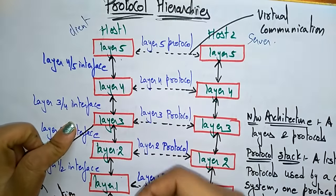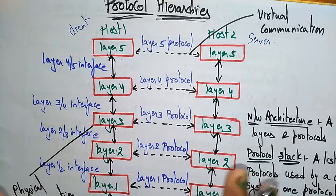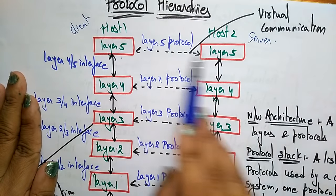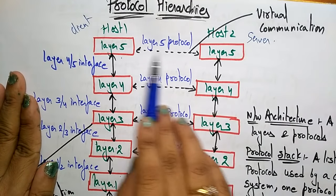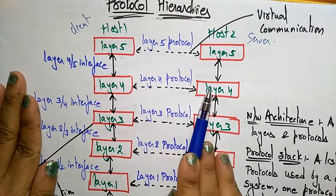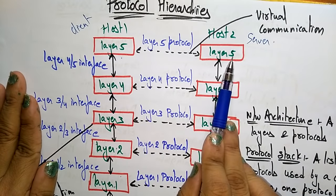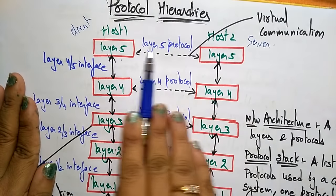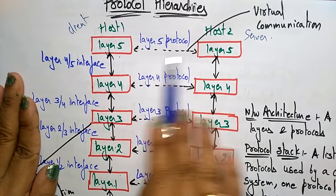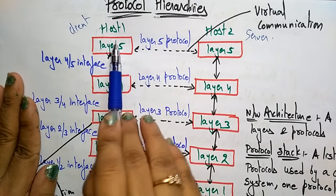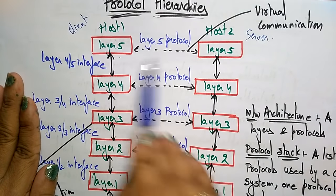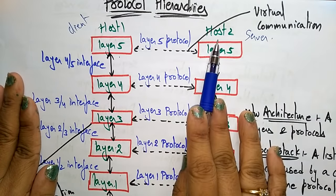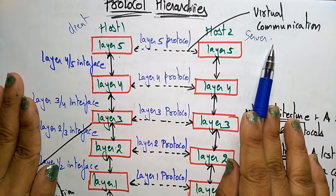Layer five is the application layer. Host one communicates with host two through layer protocols — there are protocol connections between one computer and another. This protocol is nothing but a virtual communication; it is not a physical thing. It is a virtual signal from host one to host two. A protocol is a set of rules that forms a virtual communication.